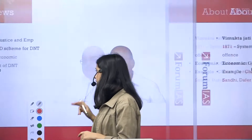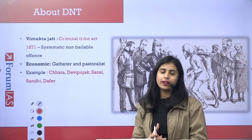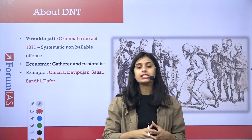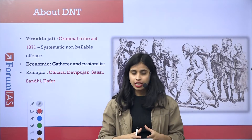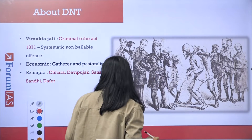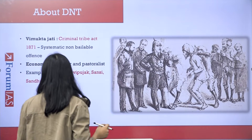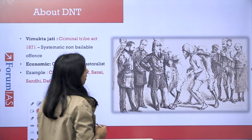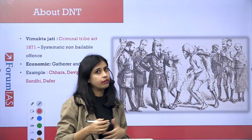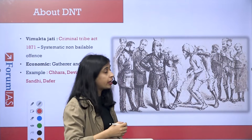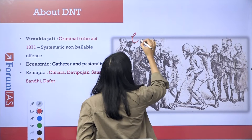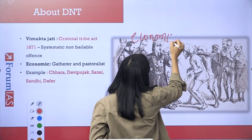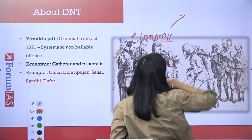First, we need to understand what denotified tribes are. To understand them, we need to know that when the British came to India, their main aim was economic exploitation. Many tribes resisted this — for example, the Santhal and others revolted. Tribes considered forests as their homeland and did not leave them, leading to continuous conflict.